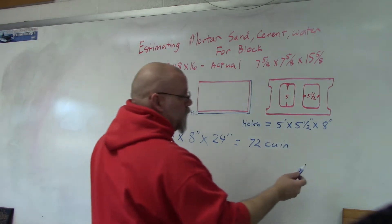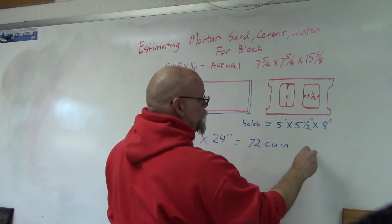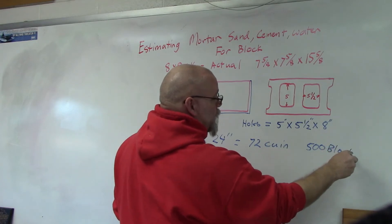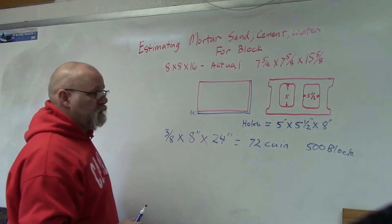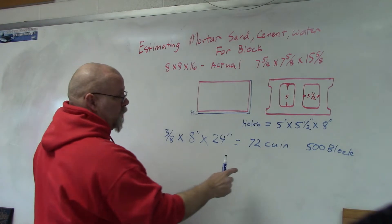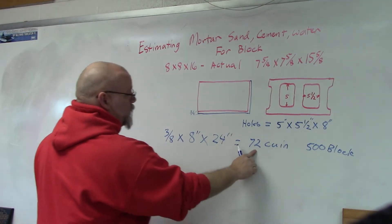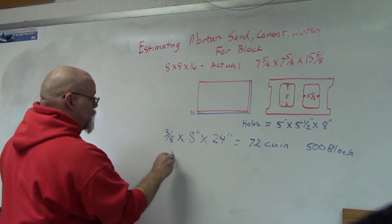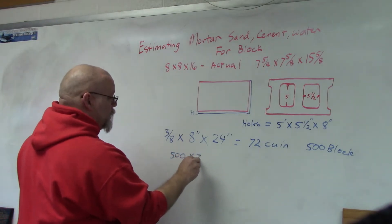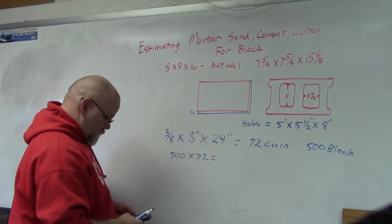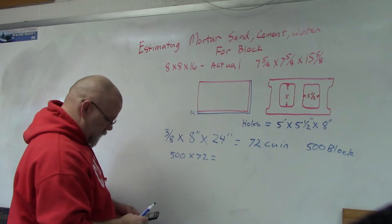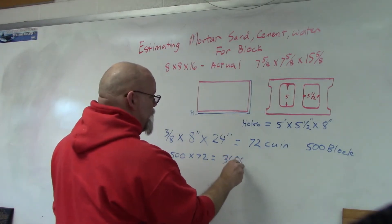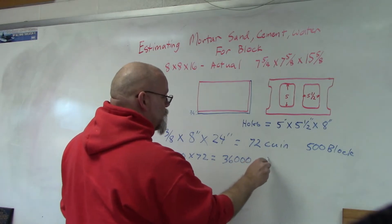Let's say we're going to do a 500-block wall. We've estimated that we're going to put in 500 blocks. So what we're going to do is take the 500 blocks times the 72 cubic inches per block, and that gives us 36,000 cubic inches.